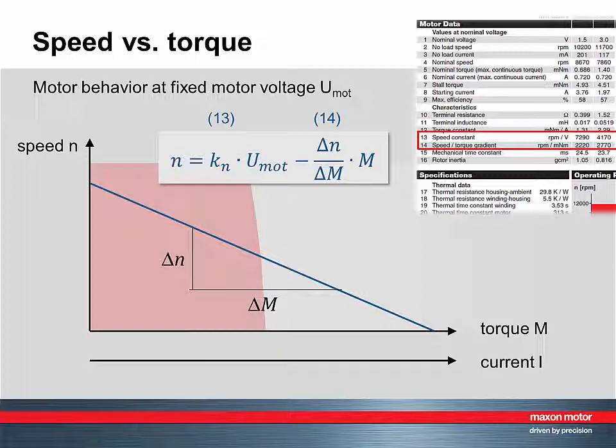KN is called the speed constant of the motor and you can find it in line 13 of the motor data in the Maxon catalogue. How can this speed torque line be explained?